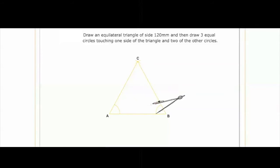will meet at O and thus divide the triangle into three equal parts. Bisect angle OAB and angle OBA. Both